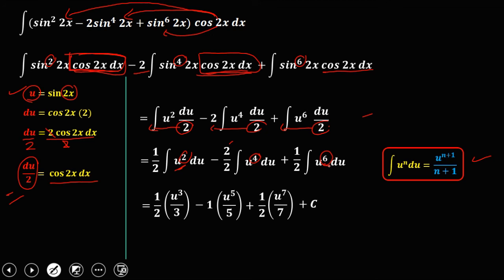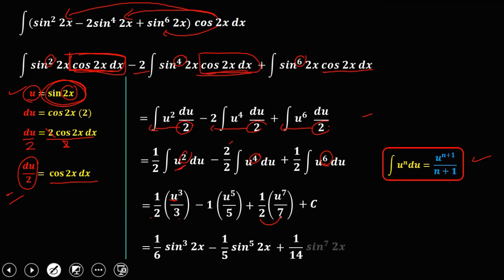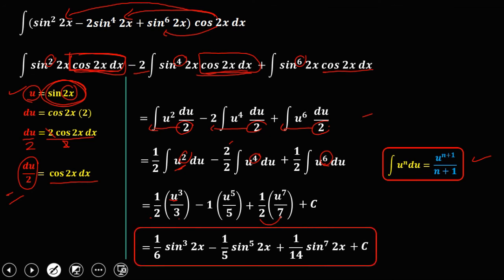Simplifying and substituting back u equals sine 2x: one half times one third gives 1 over 6, so the first term is sine to the power 3 of 2x over 6. The second term is negative 1 over 5 times sine to the power 5 of 2x. And one half times one seventh gives 1 over 14 times sine to the power 7 of 2x, plus C. This is the final answer.